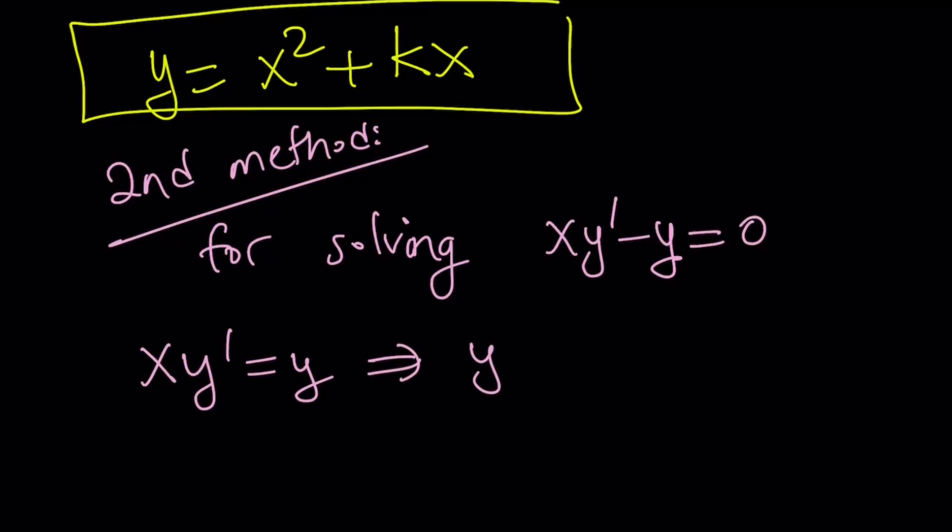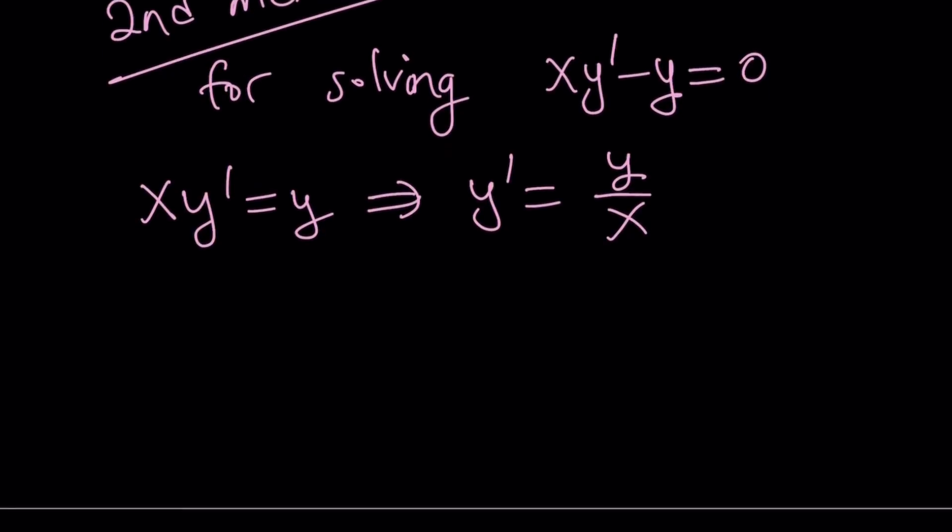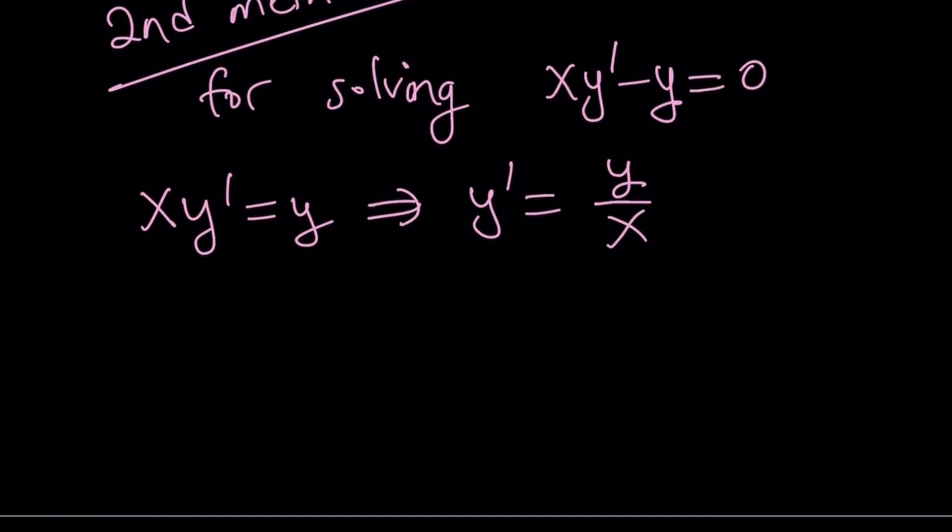I want to solve this. Let's xy prime equals y. And then from here, I can write y prime as y over x. And remember, we used a different variable here because now this is a really nice form. So let's go ahead and call this y equals ux. That means y over x is equal to u, right?